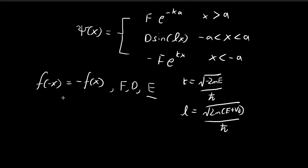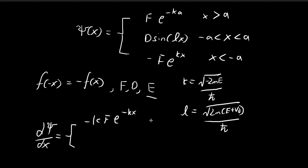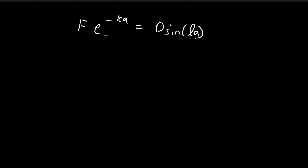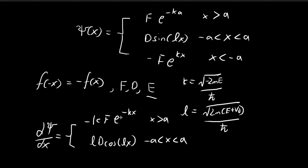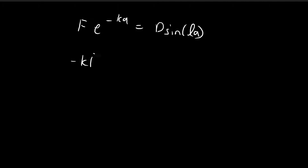We also require that dψ/dx is continuous. Differentiating the wave function, for x > a we get -kF·e^(-kx), and for the middle region we get lD·cos(lx). Setting these equal at x = a gives: -kF·e^(-ka) = lD·cos(la).